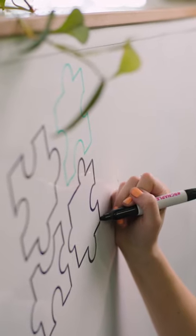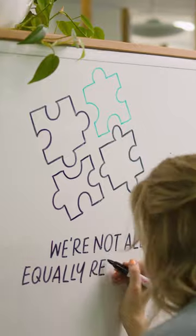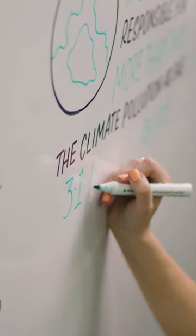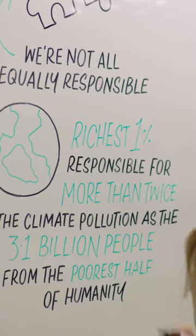And while there has been some progress, we're not all equally responsible for the damage. Research by Oxfam has revealed that the richest 1% of the world's population are responsible for more than twice as much pollution as the 3.1 billion people who make up the poorest half of humanity.